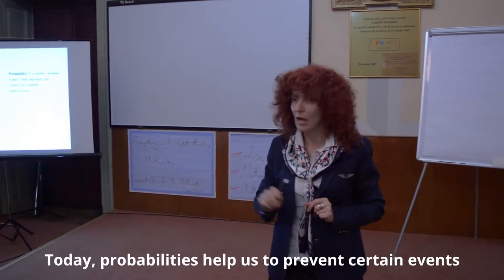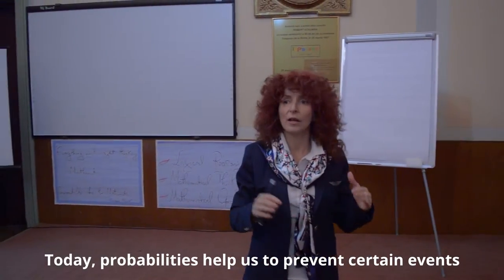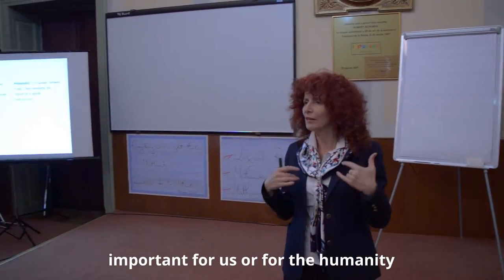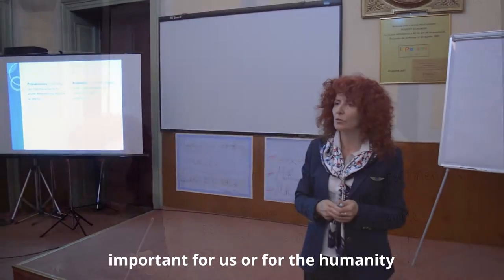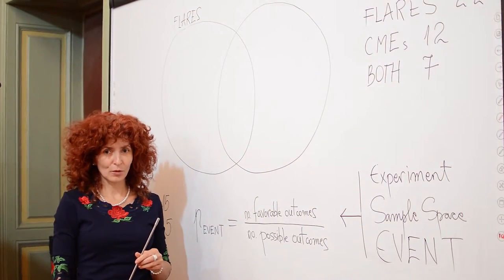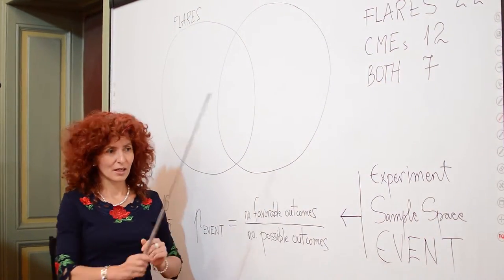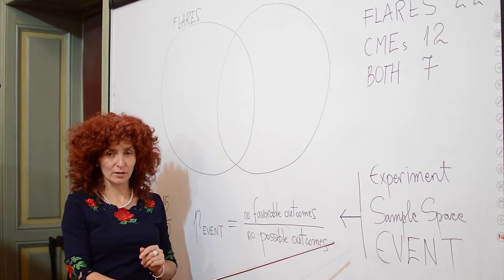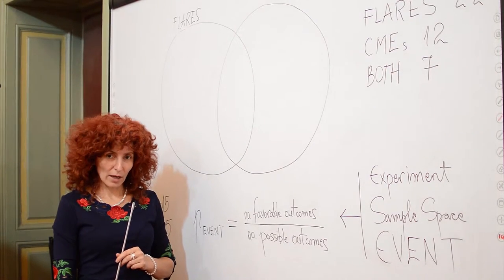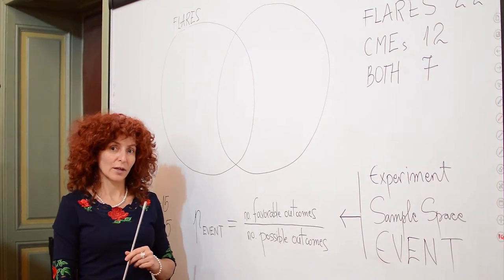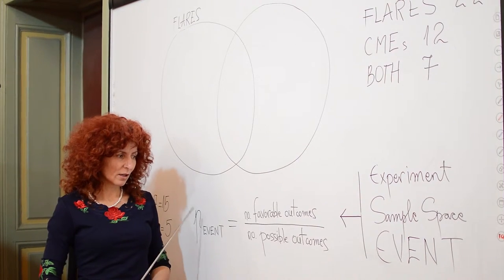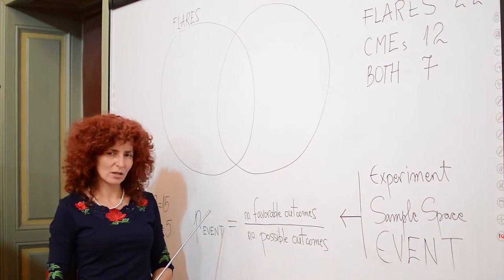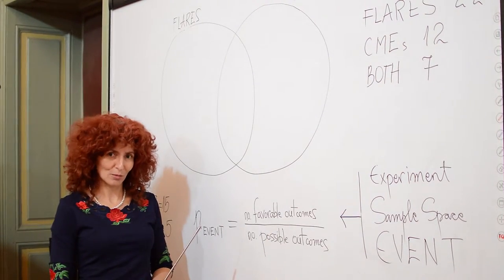Probabilities are supposed to consider the experiment, the sample space, and the event. The formula for the probability of an event is the number of favorable outcomes over the number of possible outcomes.